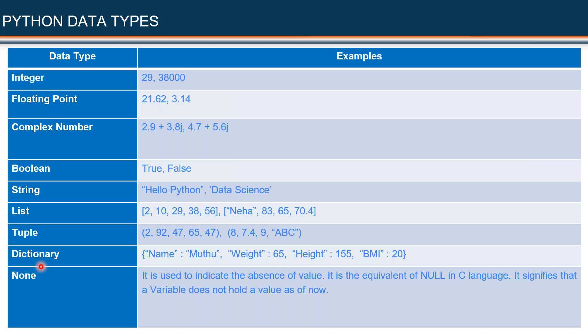What is the next important data type? It is known as dictionary. Assume that my name is Muthu, my weight is 65 kilograms, my height is 155 centimeters, and my BMI value is 20. I want to represent all these values about myself as a collection. In such situations, I will use a dictionary. The details about one person: his name, weight, height, and BMI value.